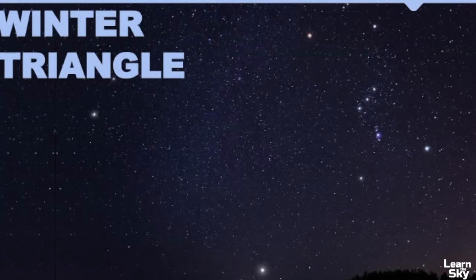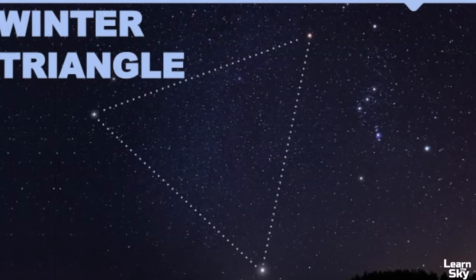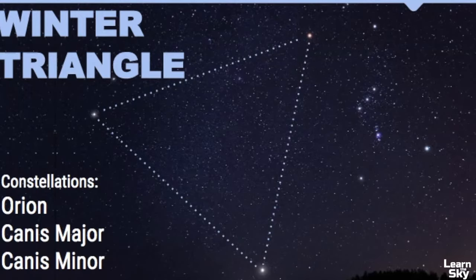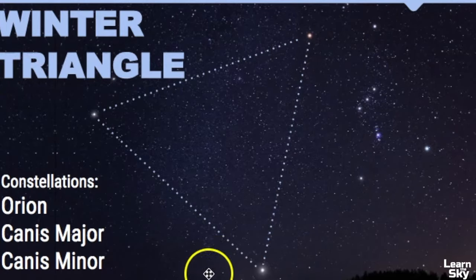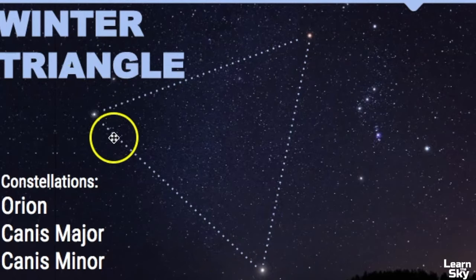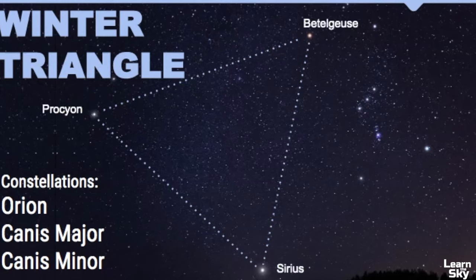The Winter Triangle is another useful asterism that connects three constellations in the winter sky. In this photo, can you make out the triangle shape using three bright stars? Here is what the shape of the Winter Triangle looks like — it connects three constellations: Orion, Canis Major (only a portion of it is seen in this photograph), and Canis Minor, this little two-star constellation. Here are the names of the stars that connect to make the Winter Triangle.